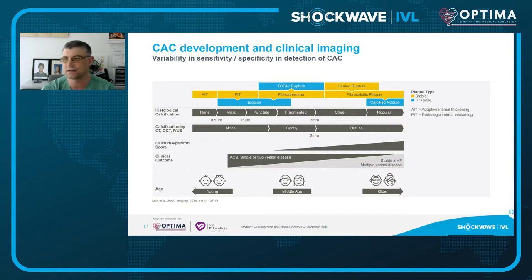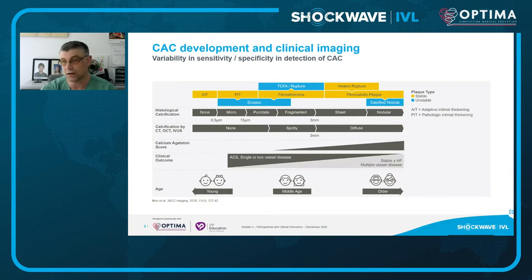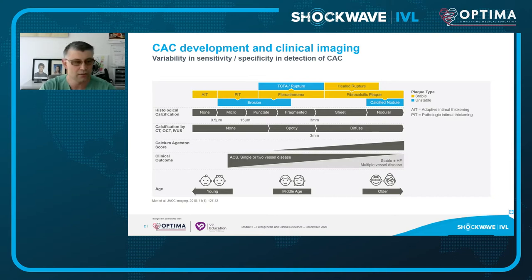The calcium Agatston score is clearly associated with age — it increases over time. But importantly, calcium actually confers stability. When you look at acute coronary syndrome presentation, it most often occurs during earlier stages of atherosclerosis, while the later stages show more stable disease, which is also conferred by the calcification process.